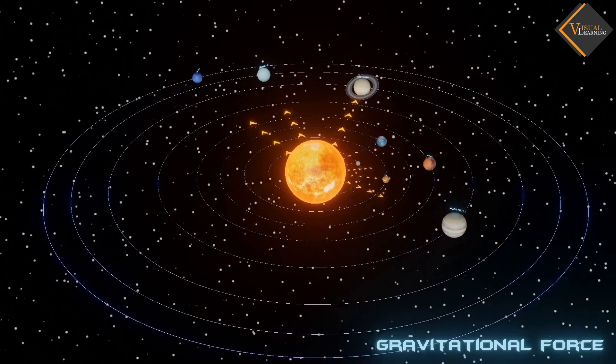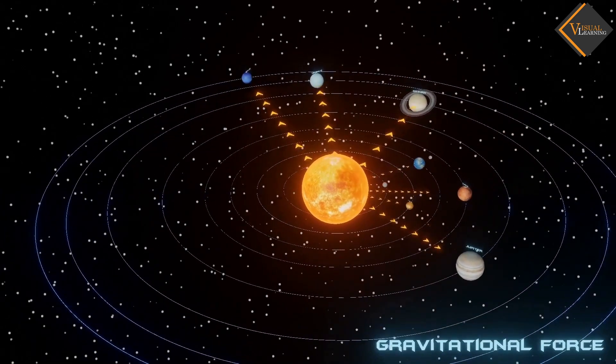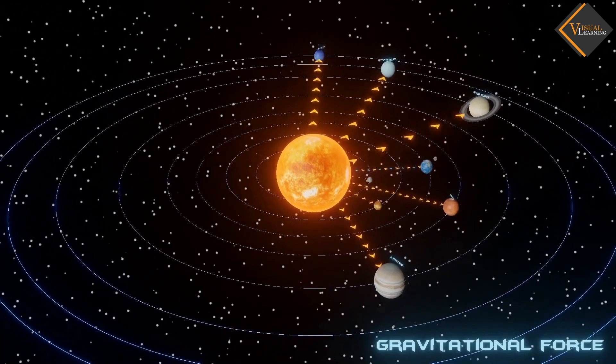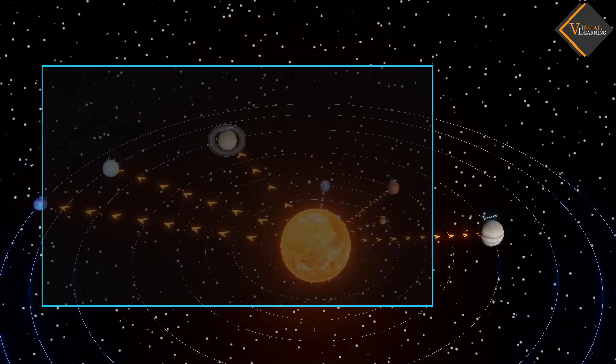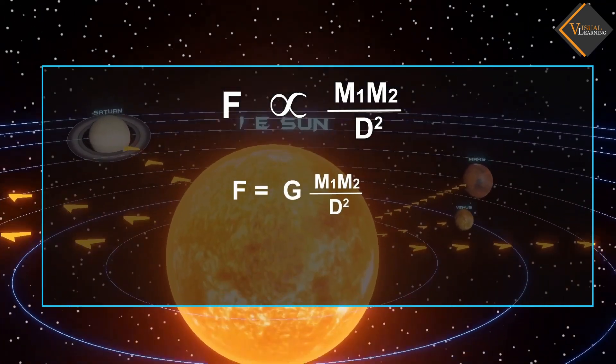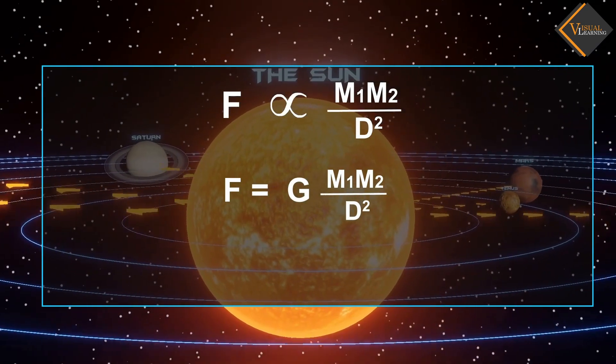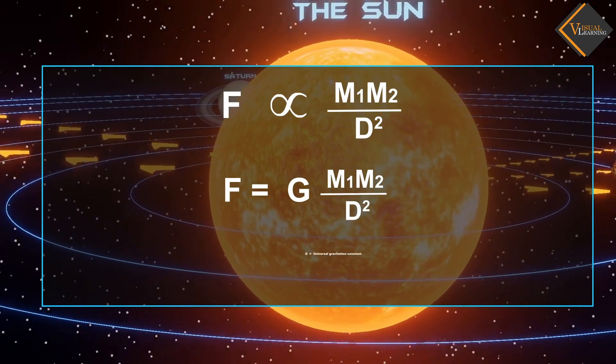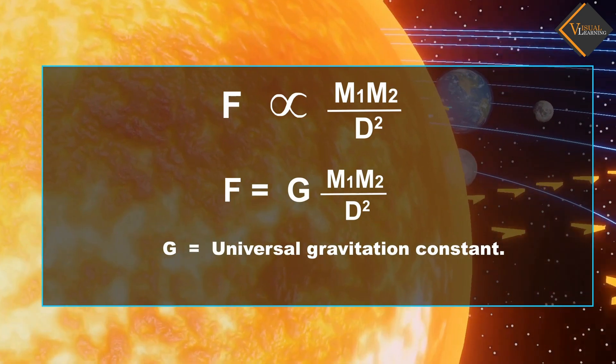In our solar system, all the planets go around the sun because of the gravitational force. Gravitational force can be expressed as an equation. When we simplify the equation, we get a constant value G. G is the constant of proportionality and is called the universal gravitation constant.